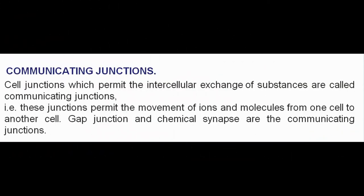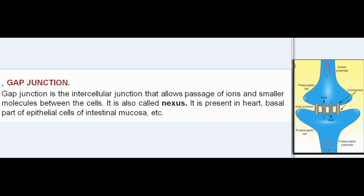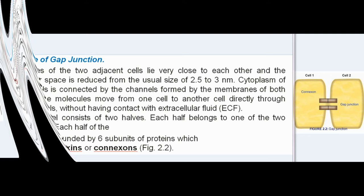Communicating junctions: Cell junctions which permit the intercellular exchange of substances are called communicating junctions. These junctions permit the movement of ions and molecules from one cell to another cell. Gap junction and chemical synapse are the communicating junctions. Gap junction is the intercellular junction that allows passage of ions and smaller molecules between cells. It is also called nexus. It is present in the heart, basal part of epithelial cells of intestinal mucosa, etc.